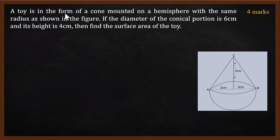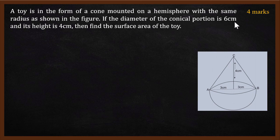A toy is in the form of a cone mounted on a hemisphere. The cone and hemisphere together form the toy. If the diameter of the conical portion is 6 cm and the height is 4 cm, then find the surface area of the toy.